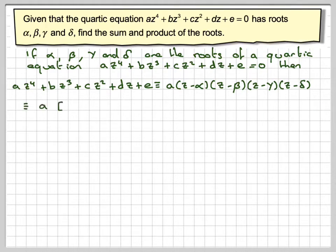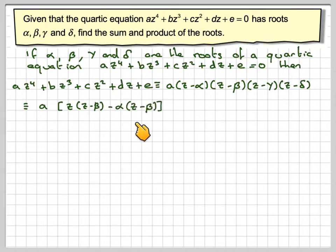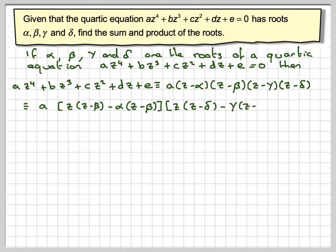Basically I'm going to multiply these two brackets together and then multiply these two brackets together, and then multiply the results together. In the first case I'm going to do (z minus alpha)(z minus beta), and then (z minus gamma)(z minus delta). Be careful with signs — leave the a until the end.